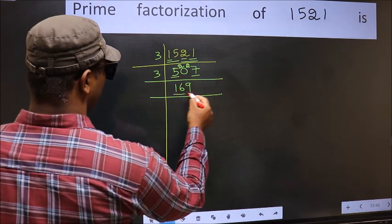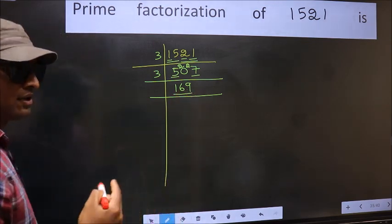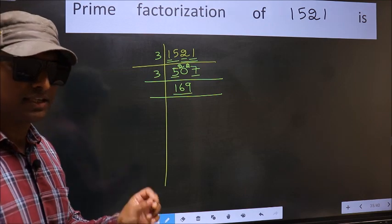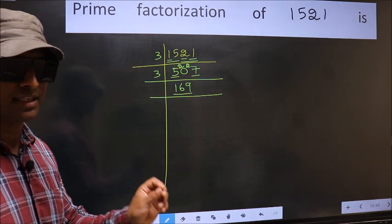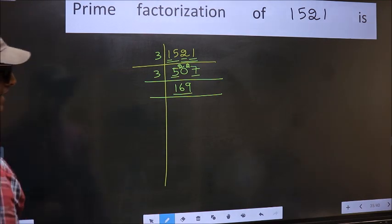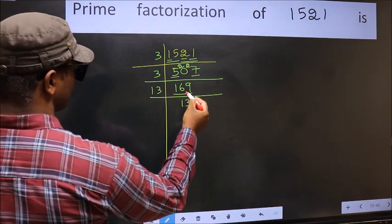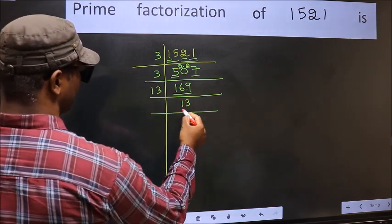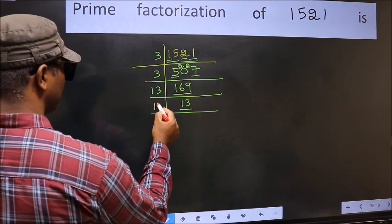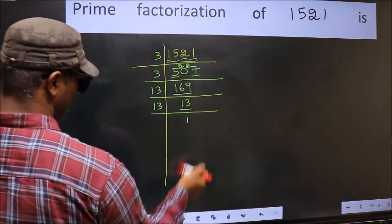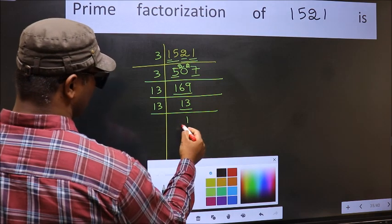Now here we have 169. Always remember, 13 squared is 169. 13 into 13 is 169. So 13 times 13 is 169. Now we have 13. 13 is a prime number, so 13 times 1 is 13. So we got 1 here.